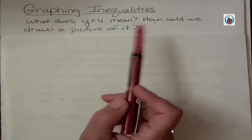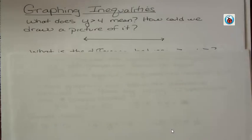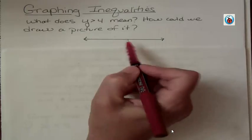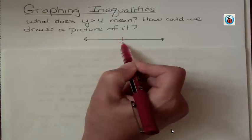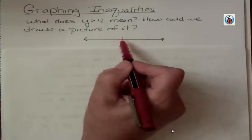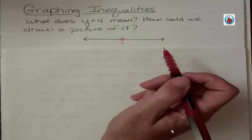So how could we show that? Because we certainly can't list them all out, and we do it with a picture, and we do it on a number line. All I want you to do when you're doing these on paper is to put the number that you're dealing with on your graph. In this case, we're dealing with 4.